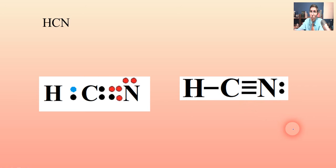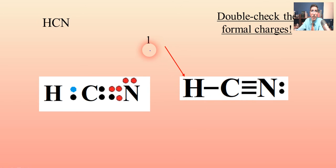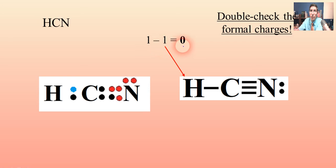Whenever you draw one of these, it's always a good idea to double-check the formal charges. Starting with hydrogen: according to the periodic table it has one valence electron, and the one bond counts for one, so we subtract that and get zero. You're trying for zeros here — this is one case where you want zero.